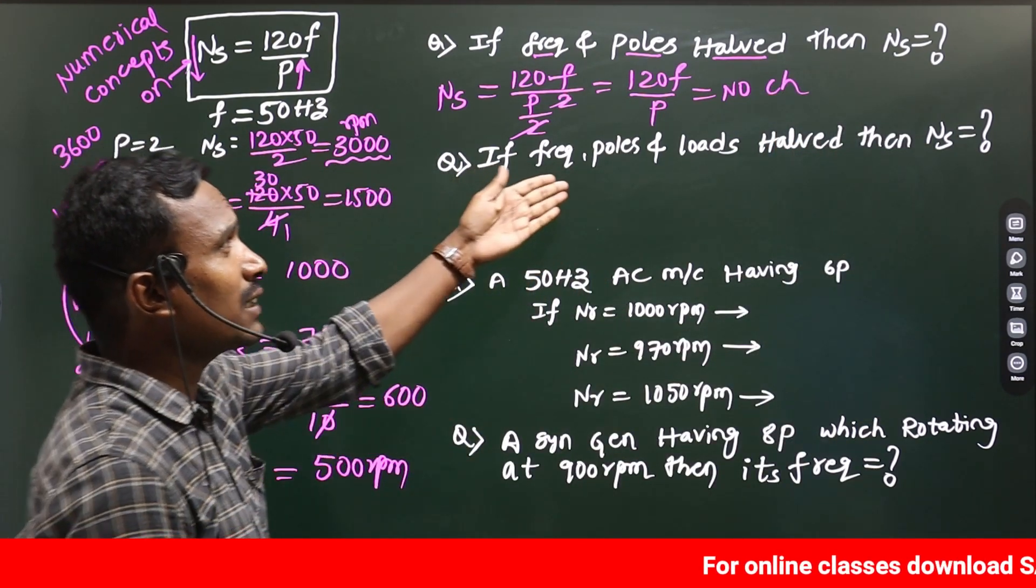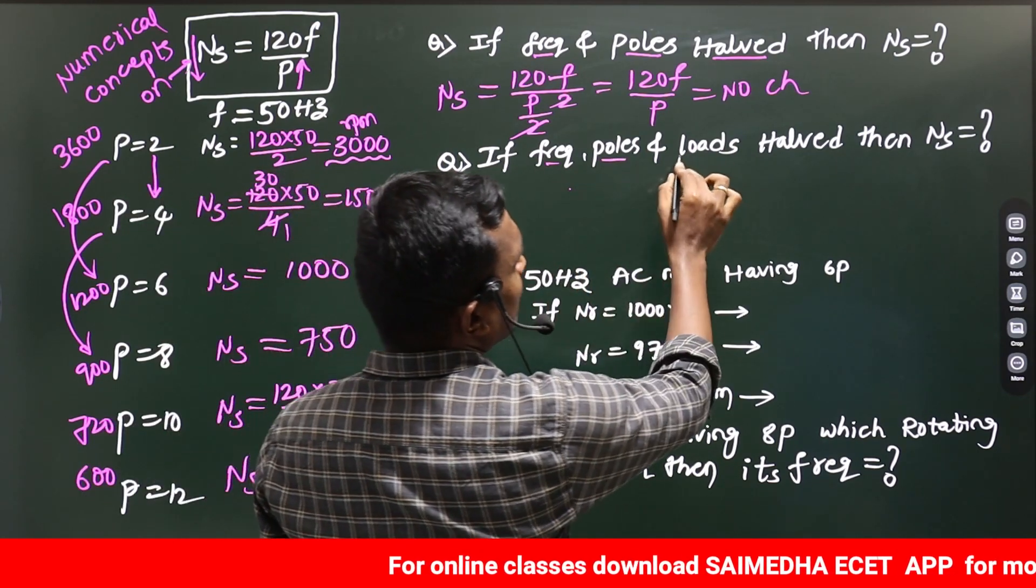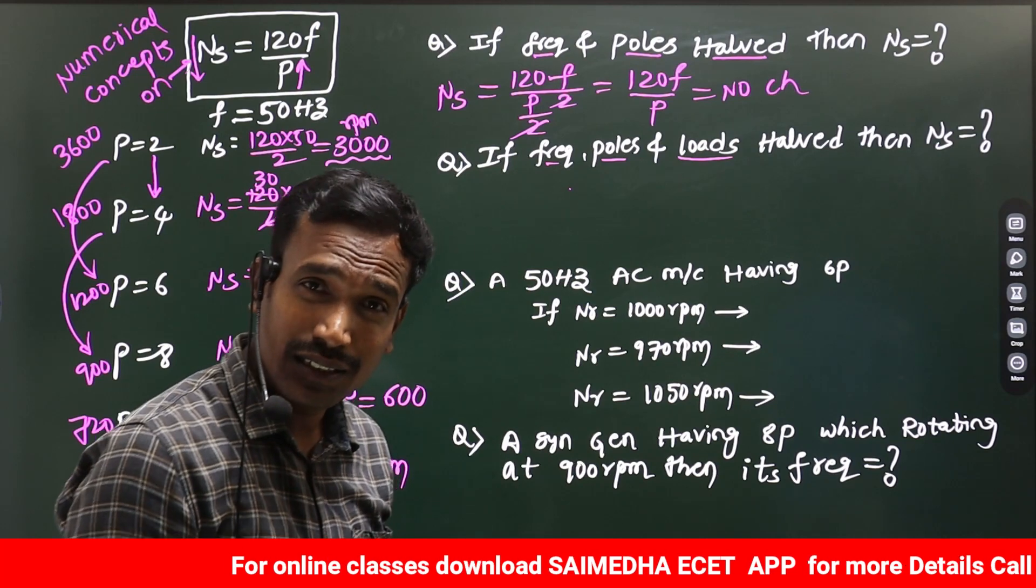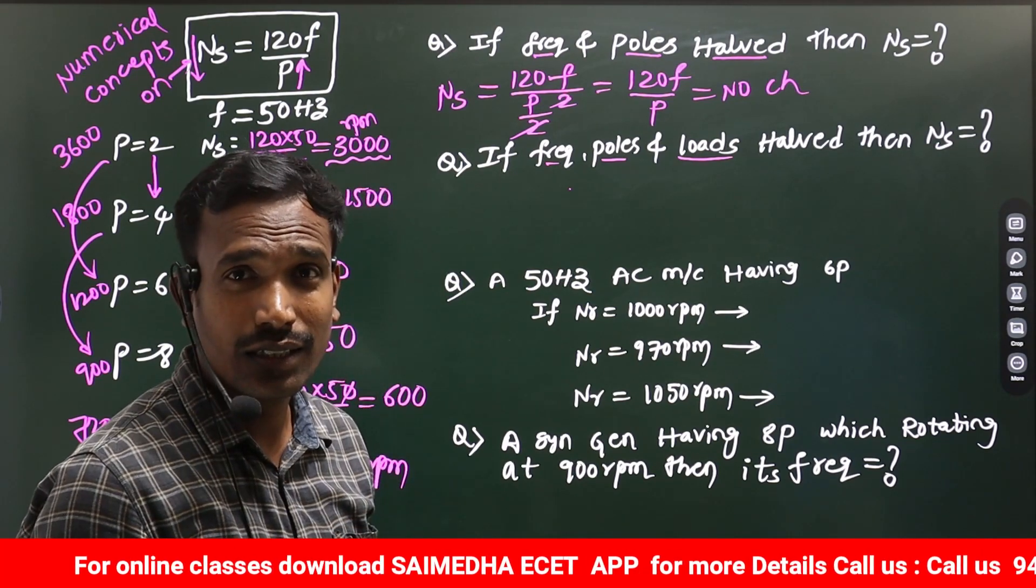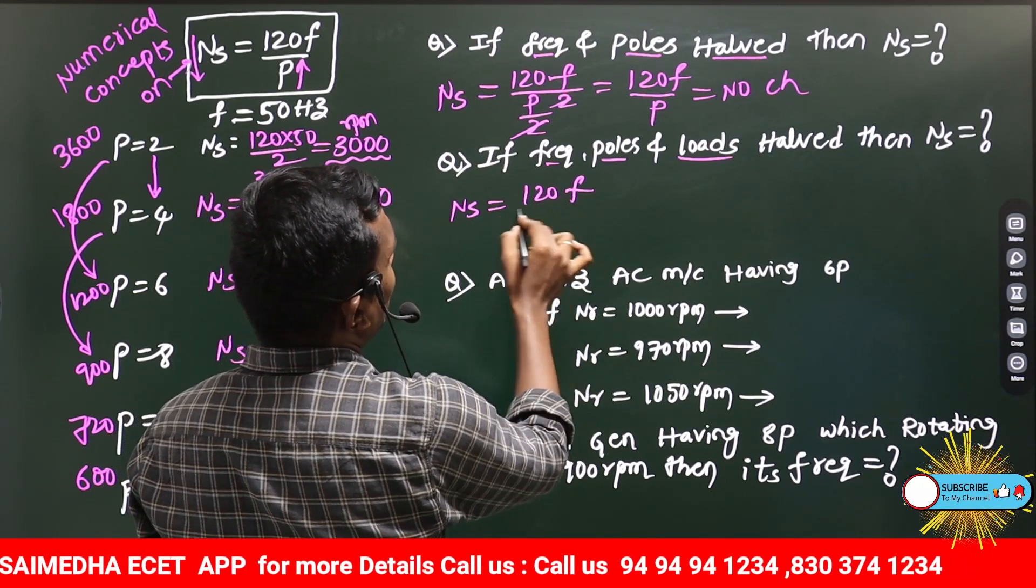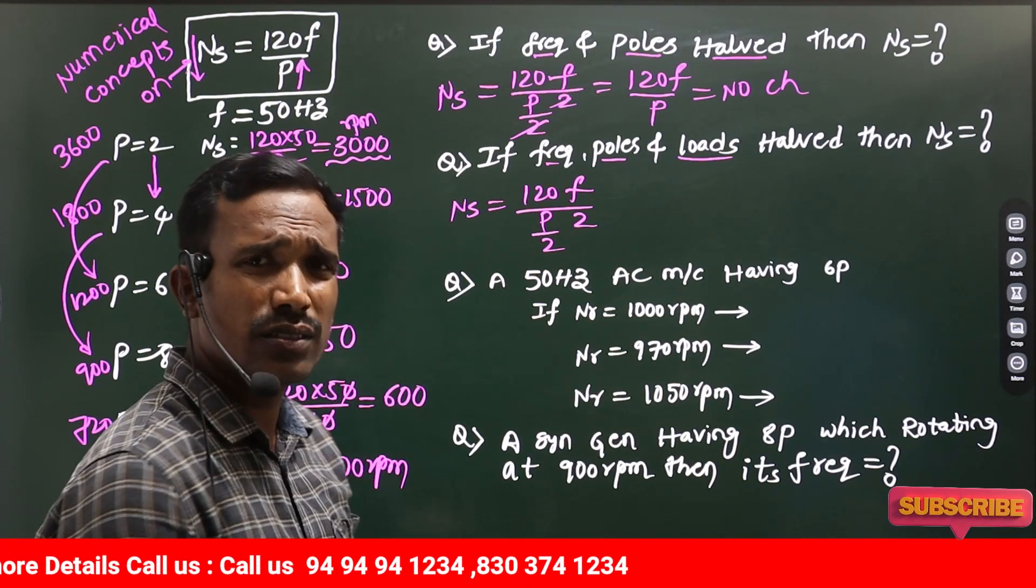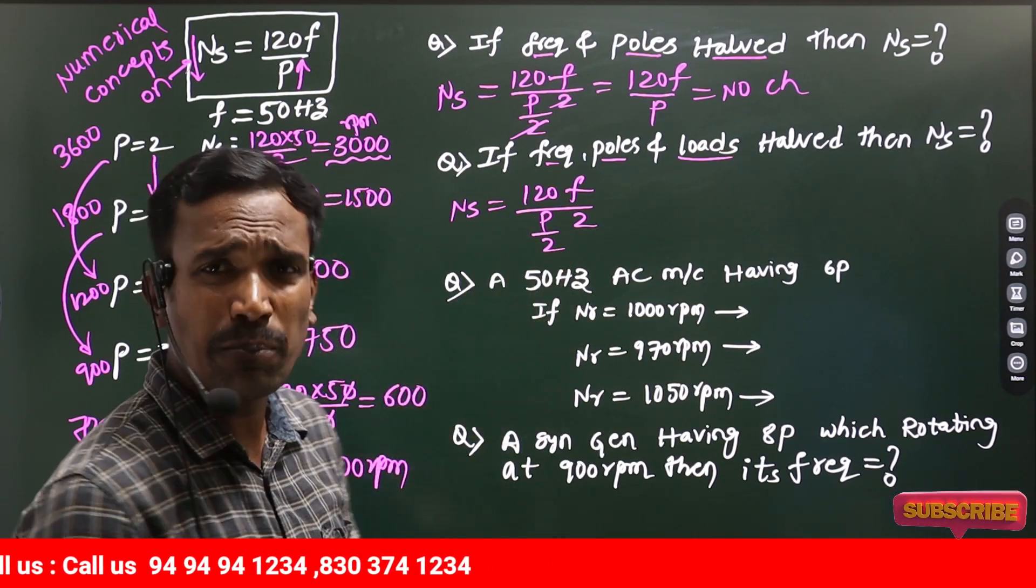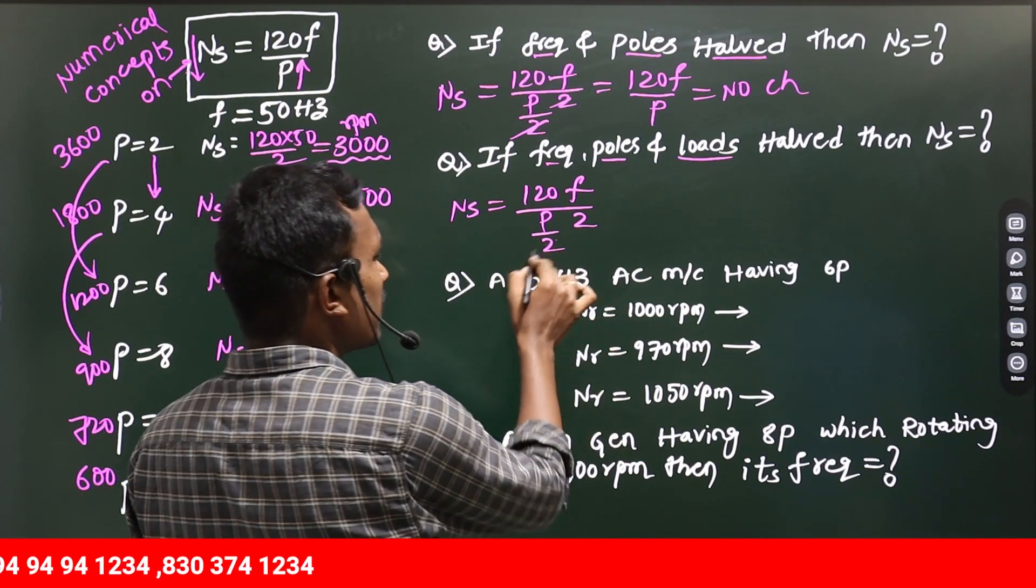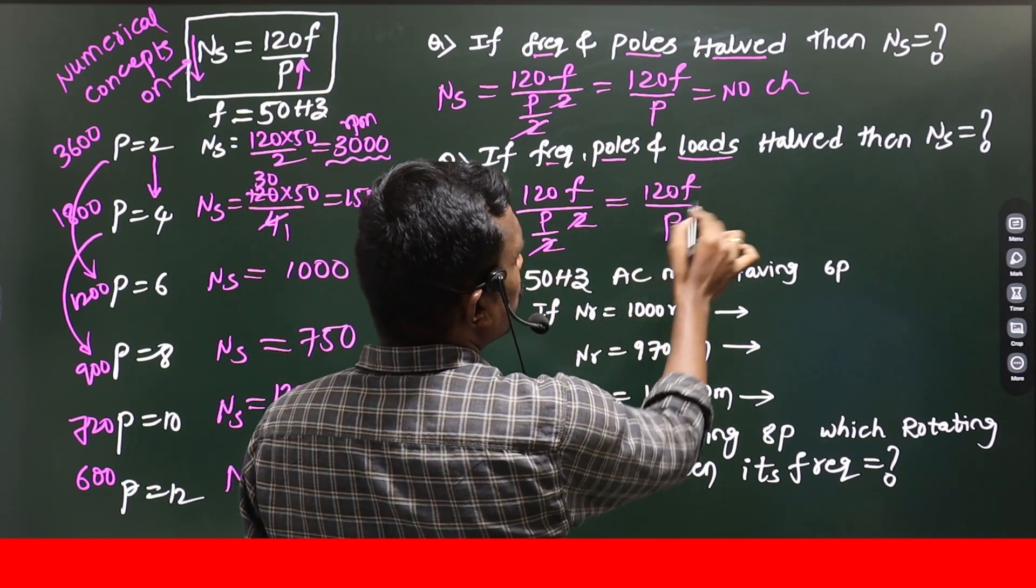Then after, they will ask you a question like this. Frequency, number of poles and load halved. So tell me, NS equals 120F by 2 and P by 2. What about load? There is no load components here. So these two get cancelled. Again, the value is same, 120F by P. No change again.